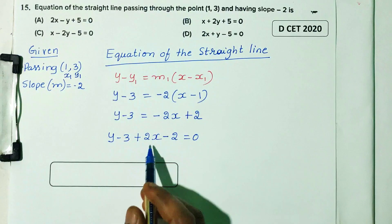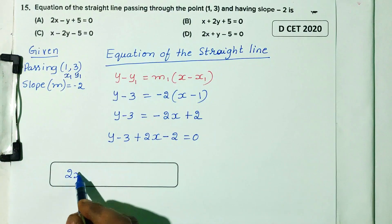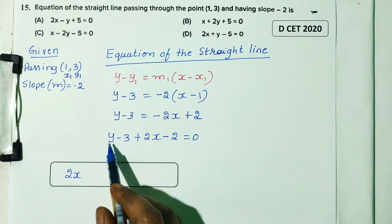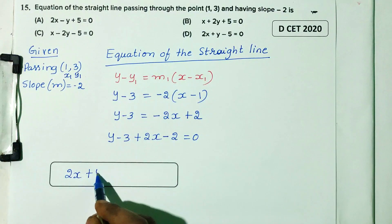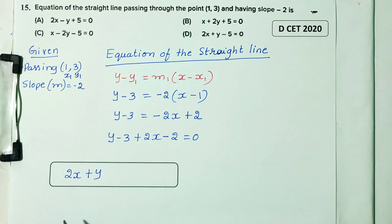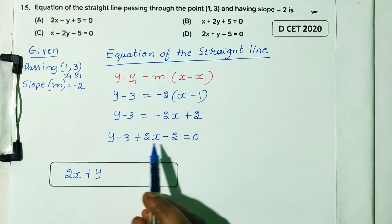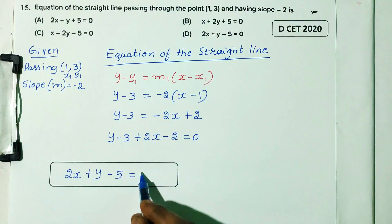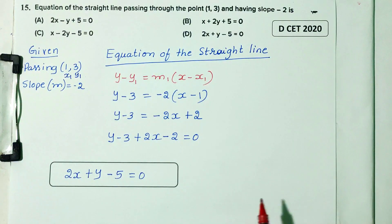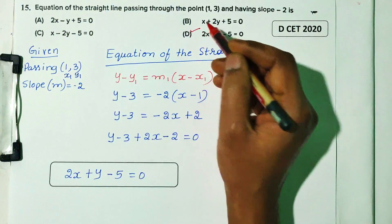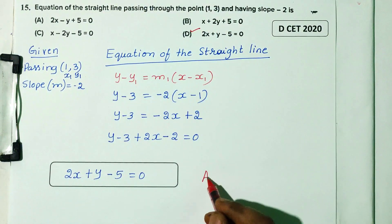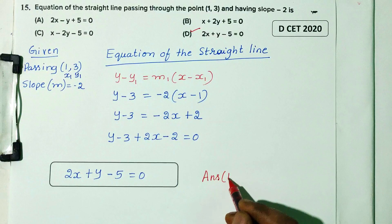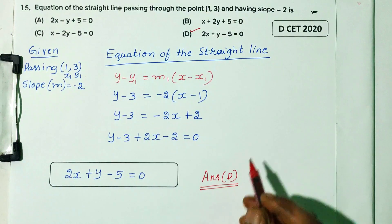Rearranging: 2x plus y minus 3 minus 2 equals 0, that is 2x plus y minus 5 equals 0. Option D is the correct answer.